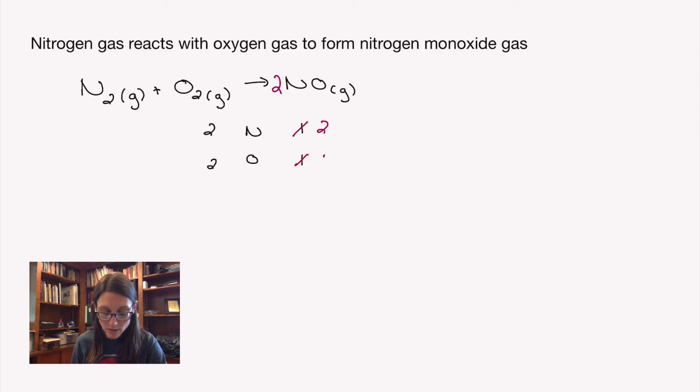So I need to get to two. If I put a coefficient of two in front of the NO, I multiply the subscripts by that coefficient. That gets me two of each element, and now I've got an equal number of nitrogens and oxygens on both sides. My equation is balanced.